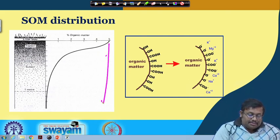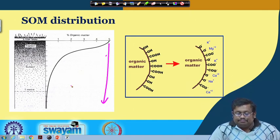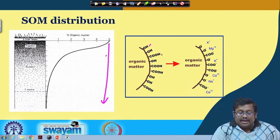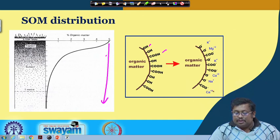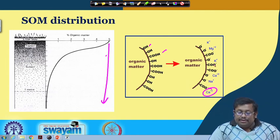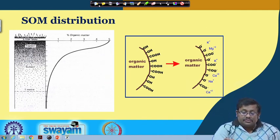As we go down from the top layer to the subsoil layer, the percentage of organic matter always decreases. Organic matter has hydroxyl groups and acidic groups which undergo dissociation, and basically they attract positive cations onto their surface. This just gives an idea about how organic matter attracts different types of cations.